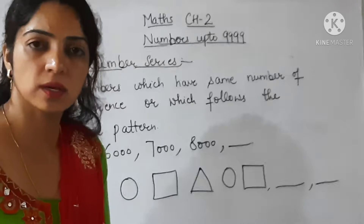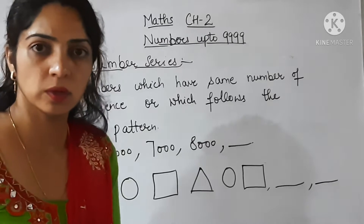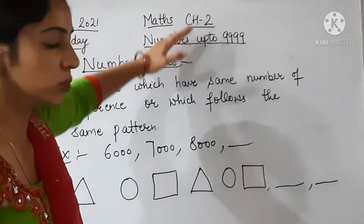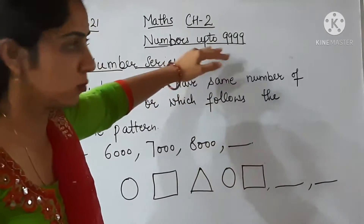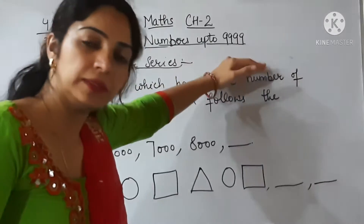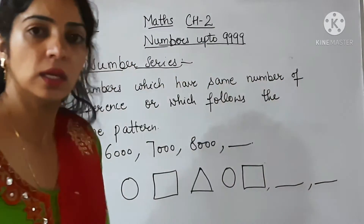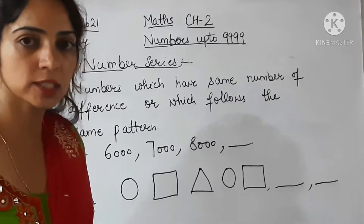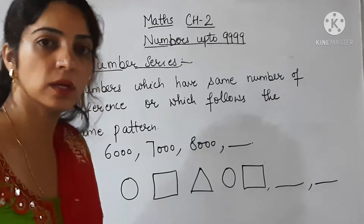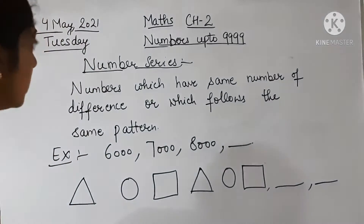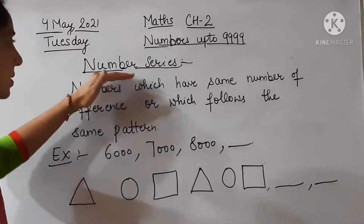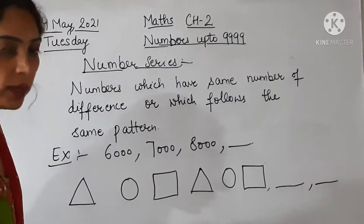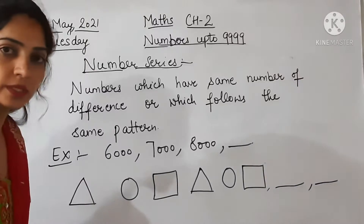Good morning students! This is your math class and we are doing chapter number two — numbers up to 9999. In the previous class we studied about standard form and expanded form of a number. In today's class we will study about number series and ascending and descending order.